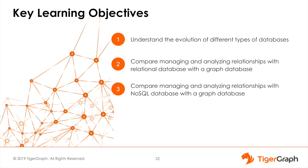We'll break down this module into three segments. In the first segment, we'll outline the evolution of databases from relational to NoSQL to graph. In the next segment, we'll use an example use case — searching for who called whom or who transferred money to whom — to compare how relational databases manage such relationships versus how a graph database does it. In the third segment, we'll consider different types of NoSQL databases to do the same analysis of managing relationships.